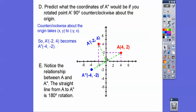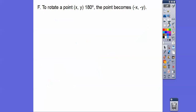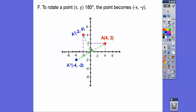Notice the relationship between A, which is at (4, 2), and A double prime, which is at (-4, -2) — they make a straight angle, a straight line from A to A double prime, which is 180 degrees rotation. It doesn't matter if we go counterclockwise or clockwise — 180 degrees is 180 degrees either way. So when we rotate a point (x, y) 180 degrees, it just becomes (-x, -y).